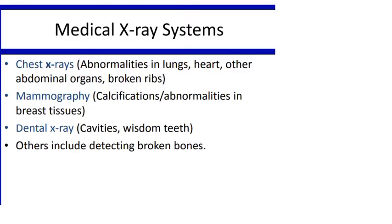Good morning guys, today we are going to study a new topic called X-ray systems. X-rays, as you might have already studied at the school level, are high frequency and high energy electromagnetic radiation. The wavelengths of this electromagnetic radiation range from 0.01 to 10 nanometers, and its frequencies are from 3×10^19 to 3×10^16 hertz. On the spectrum, X-rays reside between ultraviolet radiation and gamma rays.